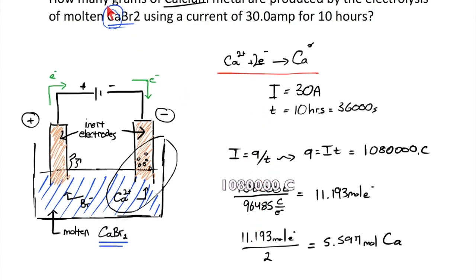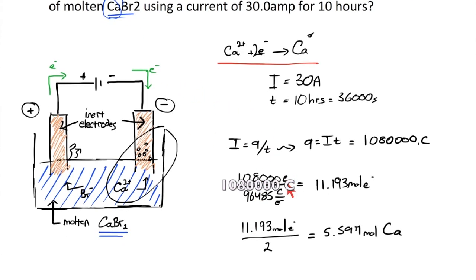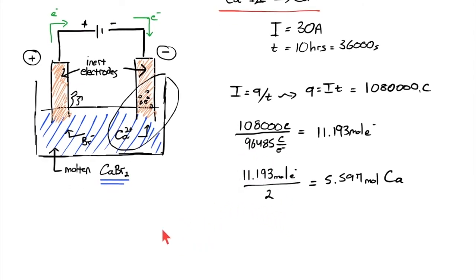And of course they asked for grams because they must always do that using the molar mass of calcium. I can take 5.597 moles and multiply that by the molar mass, 40.08 grams of calcium in one mole of calcium. Cancel out the moles and get just about 224 grams of calcium. And that's the result of the electrolysis.